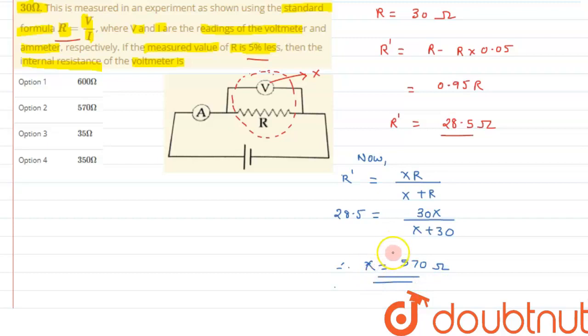So this is the resistance of voltmeter we are getting. So this matches with option 2. So I hope you have understood the concept and thank you for watching.